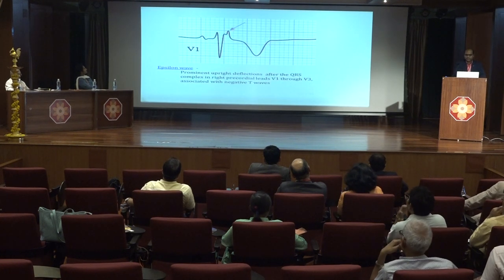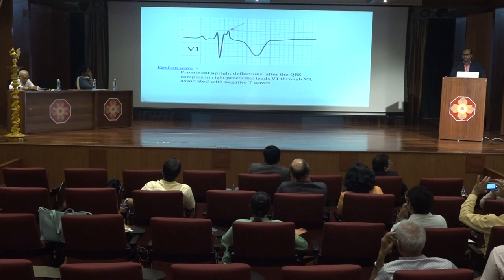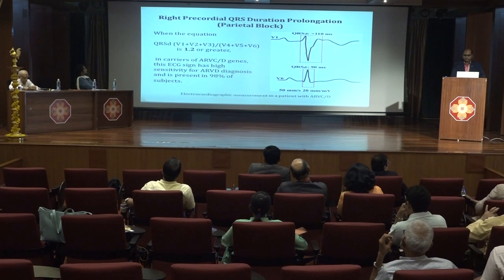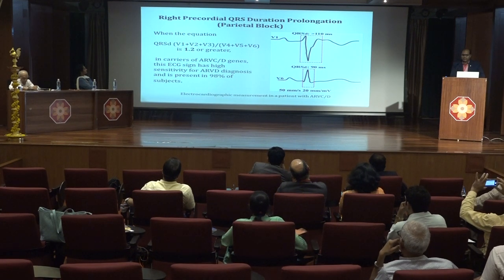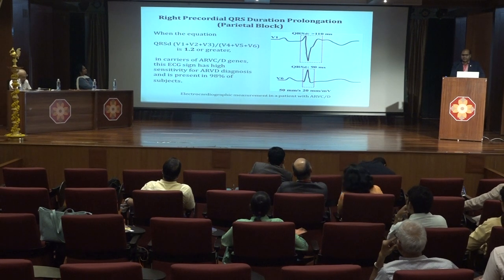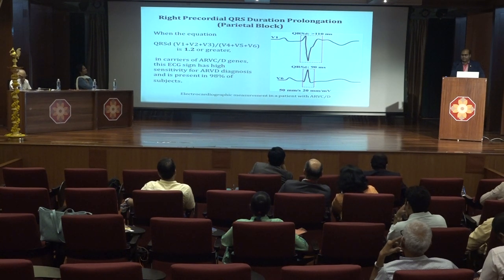The epsilon wave is a prominent upright deflection after the QRS complex in the right precordial leads V1 to V3, and is often associated with a negative T wave. Localized QRS widening more than 110 ms in leads V1, V2, and V3 is an important ECG sign of ARVD, present in nearly 98% of patients. The ratio of sum of QRS duration in V1, V2, V3 divided by V4, V5, V6 is 1.2 or more in ARVD.